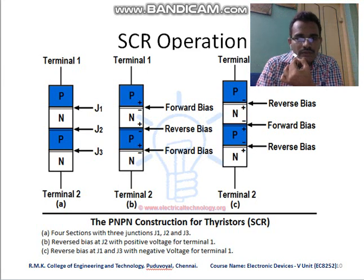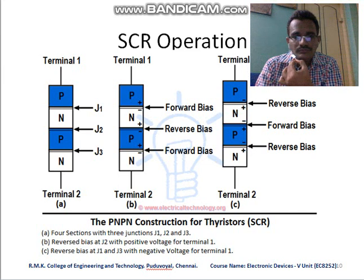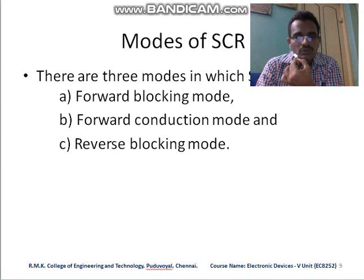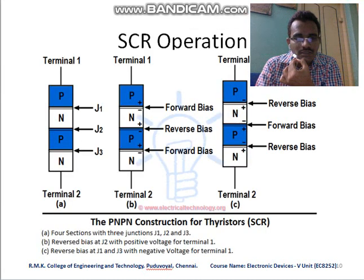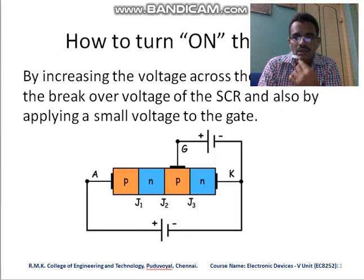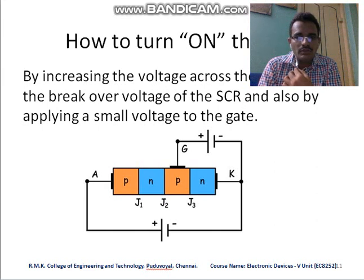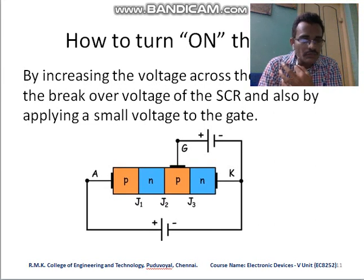In reverse blocking mode, the P-type material is connected to the negative terminal of the battery and the N-type to the positive terminal. The first two modes — forward blocking and forward conduction — occur in forward biasing, while the reverse blocking mode occurs when the SCR is connected in reverse bias. To turn the SCR ON, the anode is at positive potential, cathode at negative, and a small positive potential is applied to the gate.